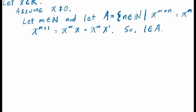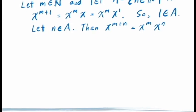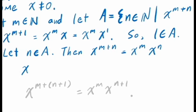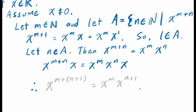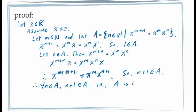Next, to prove that A is an inductive set, we take an arbitrary element n in A. For this arbitrary element, we then have the equation x to the exponent m plus n is equal to x to the exponent m times x to the exponent n. What we're trying to prove from this is that the number n plus 1 is an element in A — that is, x to the exponent m plus n plus 1 is equal to x to the exponent m times x to the exponent n plus 1. We can get this from our assumed equation by multiplying both sides by x. On the left-hand side, from the definition of natural number exponents, x to the exponent m plus n times x is x to the exponent m plus n plus 1. On the right-hand side, x to the exponent n times x is x to the exponent n plus 1, just using the definition of natural number exponents. And this gives us the equation we're looking for. We've now shown for all values of n in the set A, n plus 1 is also in the set A, which means A is an inductive set.